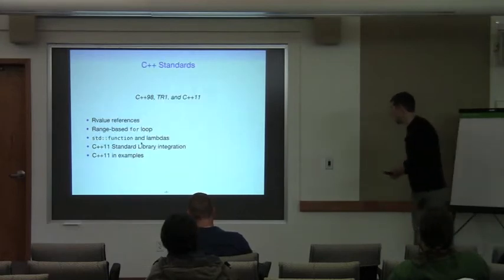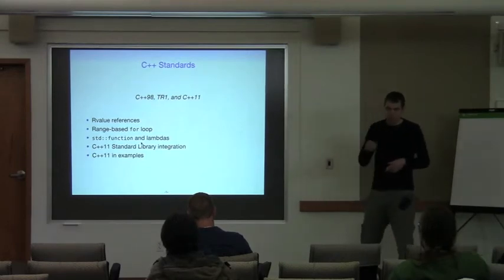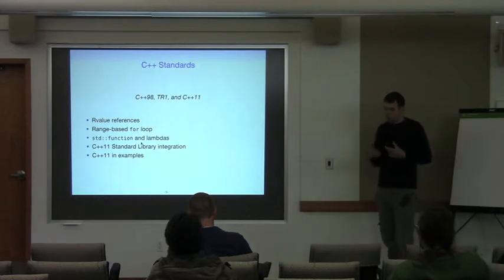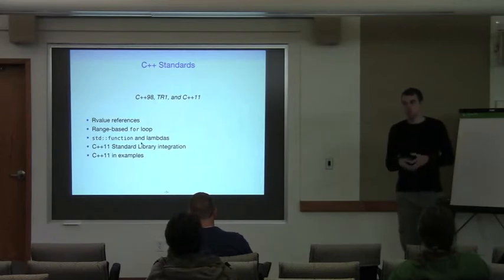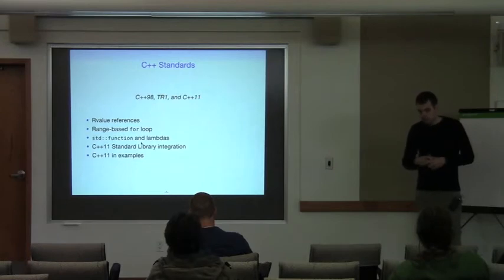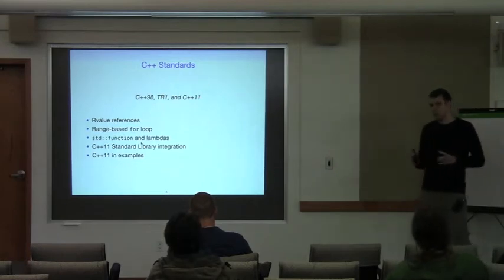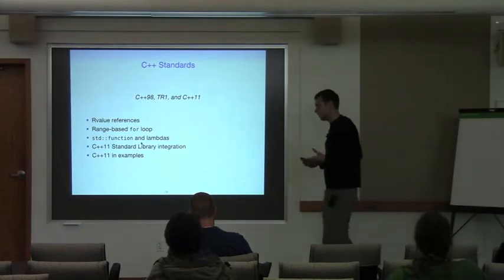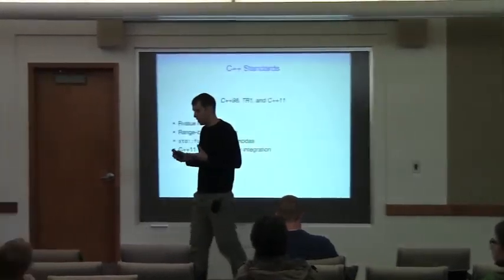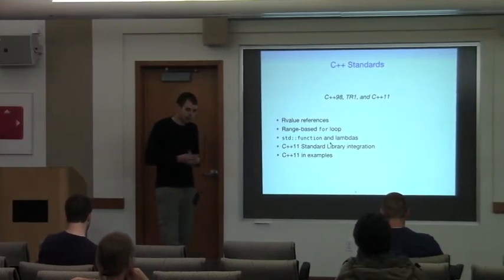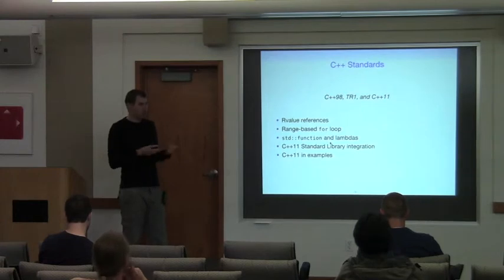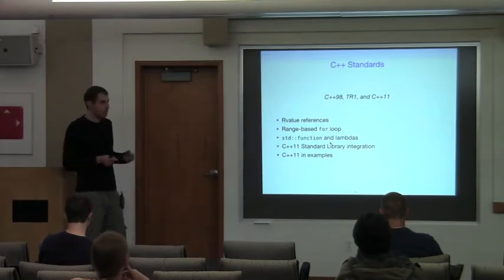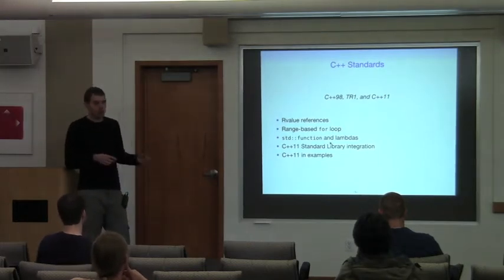ODB supports C++98 with optional support for some components from TR1, such as new containers and smart pointers. ODB also supports C++11 — and by this I don't mean we just make sure everything compiles in that mode. Rather, ODB takes full advantage of new language features. Specifically, rvalue references are used throughout the runtime and generated code to minimize copying. Range-based for is really handy for query result iteration. Where ODB exposes a callback mechanism, such as a prepared query factory or data migration function, we can use lambdas. ODB also integrates with new standard library components so we can seamlessly use smart pointers and new containers in our persistent classes.